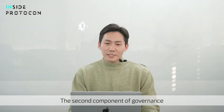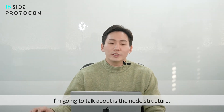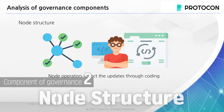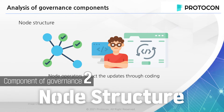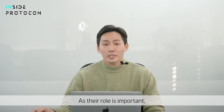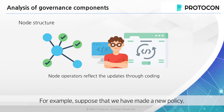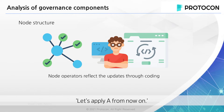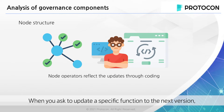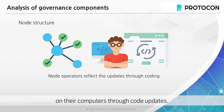The second component of governance I'm going to talk about is the node structure. Node operators also play a very important role in the blockchain ecosystem. As their role is important, they work with corresponding responsibilities and authority. For example, suppose that we have made a new policy to apply from now on. When you ask to update a specific function to the next version, node operators must reflect the updates on their computers through code updates.